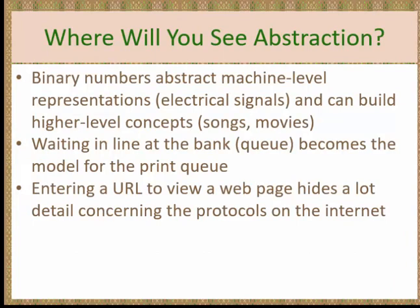In the next few weeks, where will you see abstraction? We'll start with binary numbers, which abstract machine-level representations — taking electrical signals and saying that's a zero and that's a one. We'll look at data structures, like the concept of a queue — waiting in line for a bank — and now we have the print queue. Finally, detail hiding: if I type www.microsoft.com in my browser, there are many servers being hit, my request passing from one server to another until it hits the Microsoft server, then the HTML and image files are sent back. There's a lot of detail I don't think about, and I expect it to happen really fast.